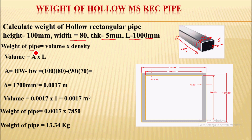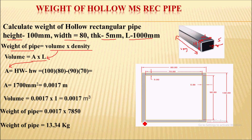Weight of pipe is given by volume into density. So we have to first calculate the volume. Volume is nothing but area into length, where area means the area of the rectangular cross section. The area of this hollow rectangular section is the area of the external rectangle minus the area of the internal rectangle, so that we get the required area.